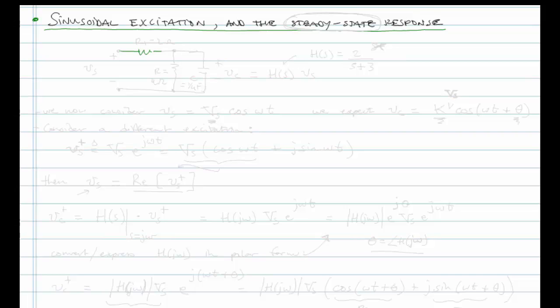We're going to go back to our handy circuit that we've been using for a while now. So we have R1 equal to 2 ohms, R equal to 4 ohms, and C equal to a quarter farad. We have an excitation Vs and we have a response Vc. And we have expressed the steady-state response as H of S times Vs, where H has been found to be equal to 2S divided by S plus 3.